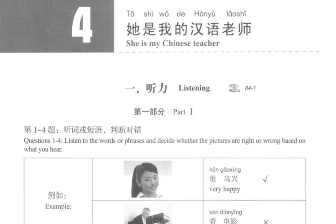一 听力 1. Listening. 第一部分 Part 1. 第一到四题。听词或短语，判断对错。Questions 1 to 4. Listen to the words or phrases and decide whether the pictures are right or wrong based on what you hear.